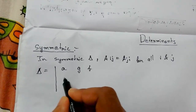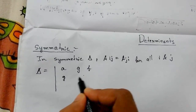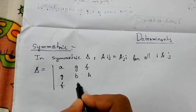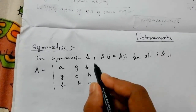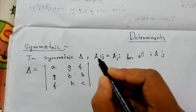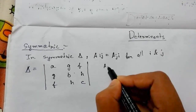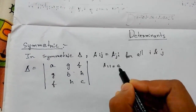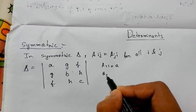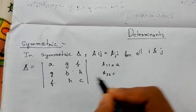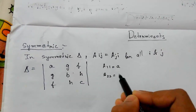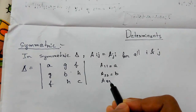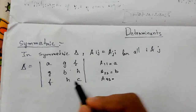So we have determinant A: the first row is a, g, f; the second row is g, b, h; the third row is f, h, c. Now a11 equals a, a22 equals b, and a33 equals c.